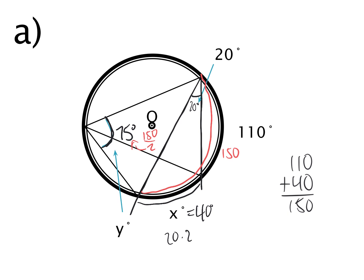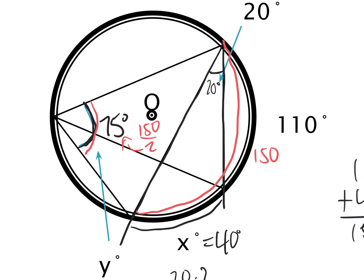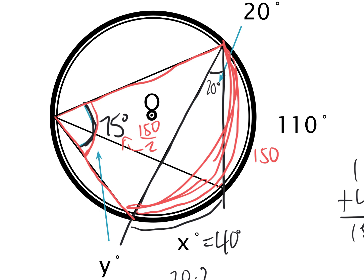Hannah's question: why does the 110 affect the 75? Because angle Y stems all the way from here to here — you can't use just one piece of the arc, you have to use the whole arc. That's why we added the 110 and the 40 together to get 150.